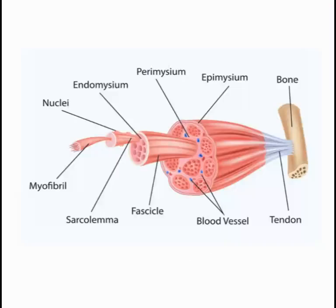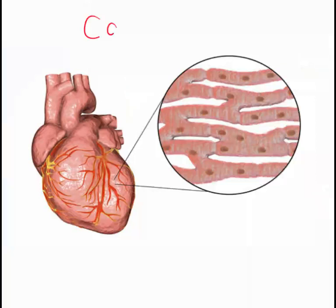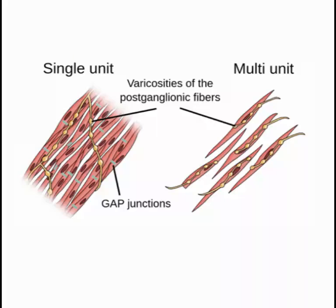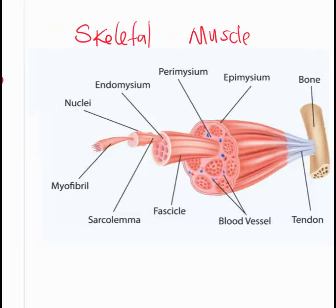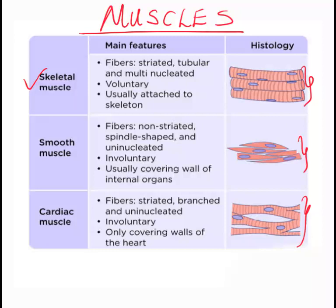This is the structure of the skeletal muscle, and this is the cardiac muscle, and this is the smooth muscle. So now you know them — we can draw them, we can give their features and their functions.